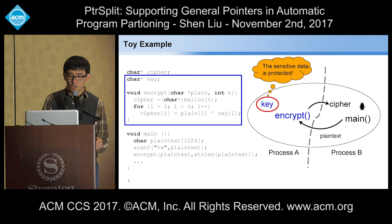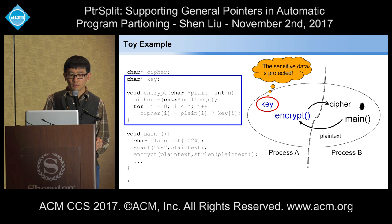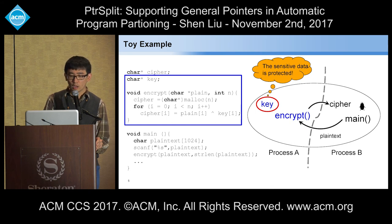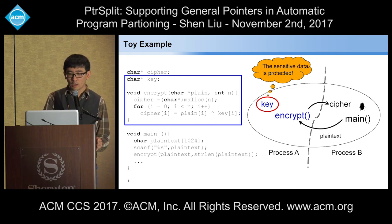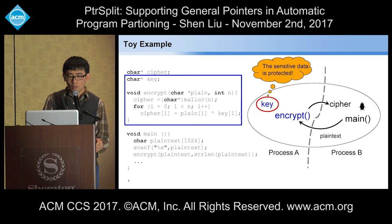If we borrow the idea of program partitioning, we partition the original program into two parts. We put the sensitive data key and sensitive function encrypt into one partition on the right side and make them run on process A. We put the variable cipher and function main into another partition and let them run in process B. Whenever main wants to encrypt, it has to send the parameters and buffer from process B to process A. When encrypt finishes its encryption operations, it sends back the result from process A to process B. Even if the right side is hijacked by attackers, we can still protect the sensitive data key.